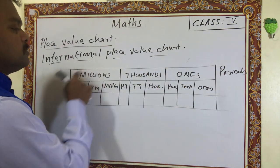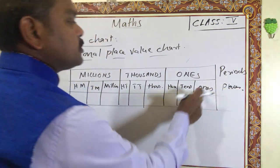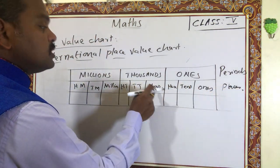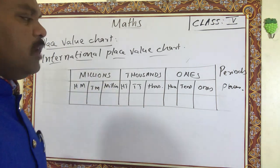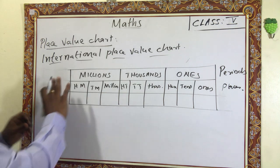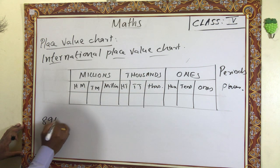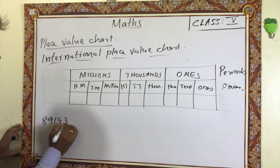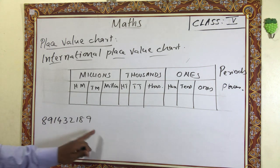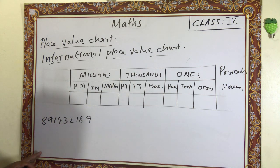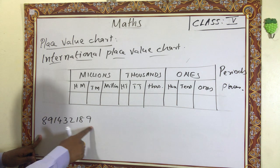So in the international place value system there are three periods: ones, thousands, and millions. The places are: ones, tens, hundreds, thousands, ten thousands, hundred thousands, and millions. Now I am going to place a number in this international place value system. First count the digits: one, two, three, four, five, six, seven, eight, nine — it is a nine-digit number.